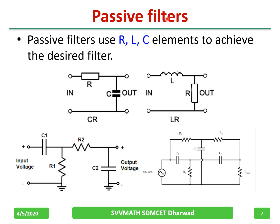Passive filters use RLC elements to achieve the desired filtering. This includes low pass filter, high pass filter, band pass filter, and band elimination filter — all built purely using R, L, and C. These are the examples of passive filters.